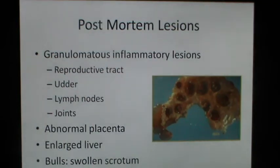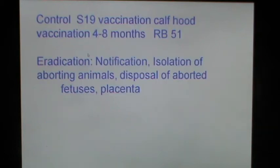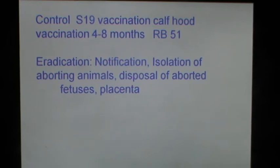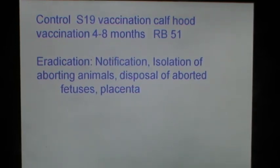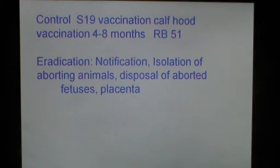Post-mortem lesions include granulomatous inflammatory lesions in the reproductive tract, udder, lymph nodes and joints. The placenta is abnormal and leathery, there is an enlarged liver, and bulls may show swollen scrotum. Control includes widespread use of Strain 19 vaccine for vaccination of 4 to 8 month female calves, practiced in many countries. Currently, RB51, a vaccine for adult cattle, is also available. Eradication of the disease involves notification, isolation of aborting animals, disposal of aborted fetuses and placenta, and slaughter of infected animals.